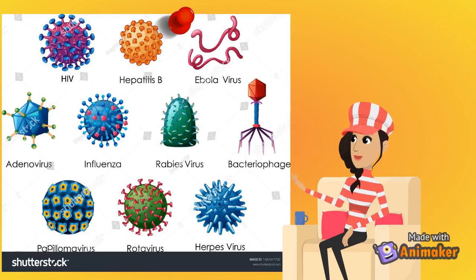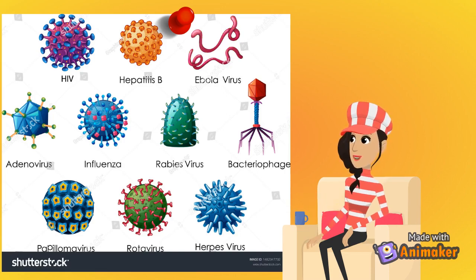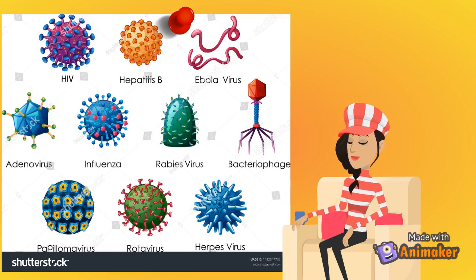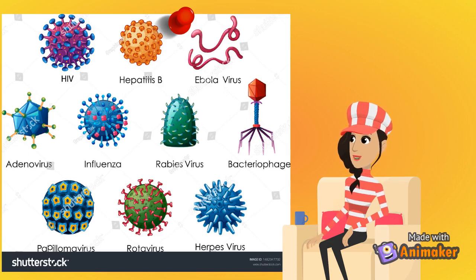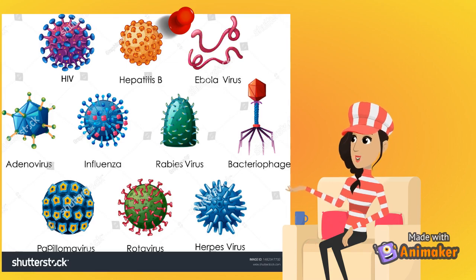Viruses are the smallest of all the microbes. They are said to be so small that 500 million rhinoviruses, which cause the common cold, could fit onto the head of a pin. They are unique because they are only alive and able to multiply inside the cells of other living things, because they can't capture or store energy themselves. The cell they multiply in is called the host cell. Viruses are microscopic parasites, generally much smaller than bacteria, and lack the capacity to thrive and reproduce outside of a host body.